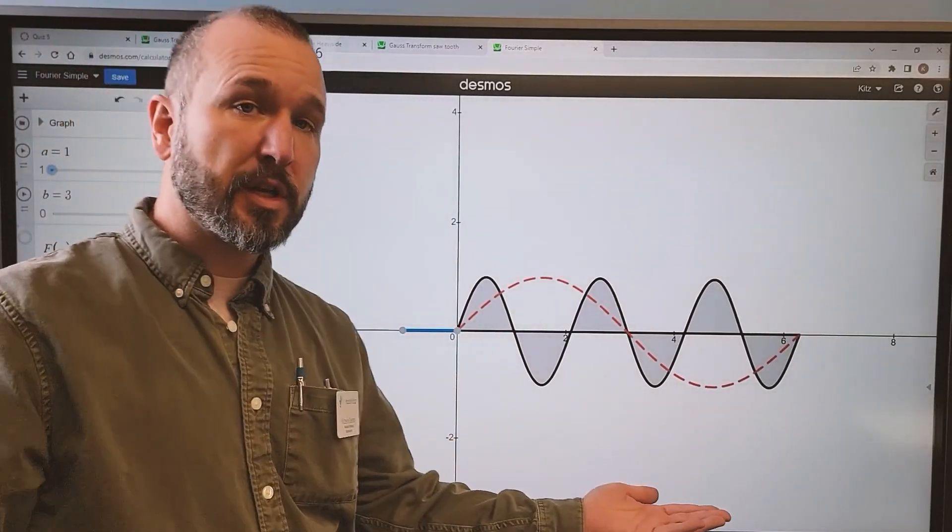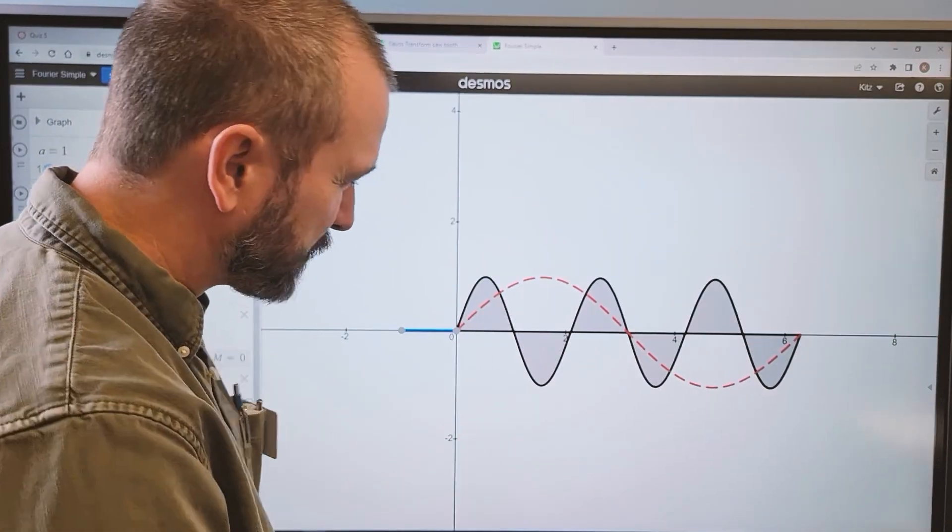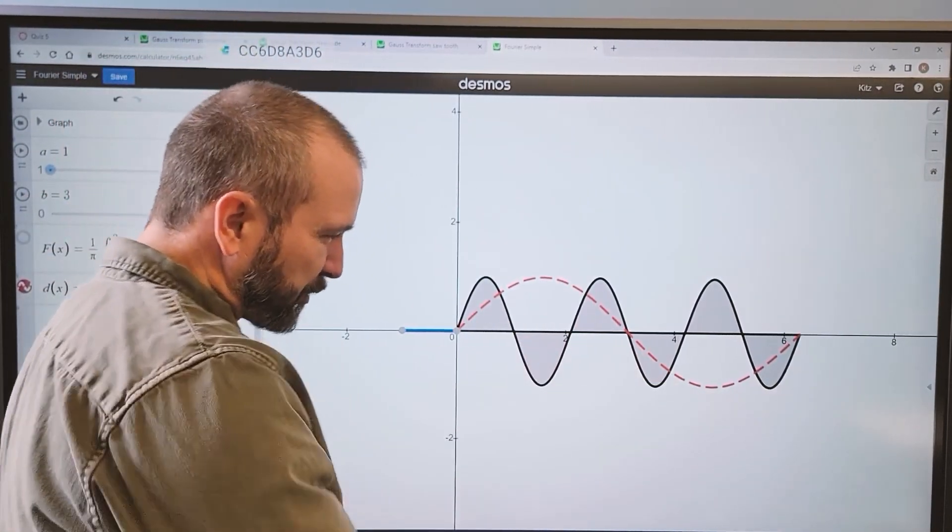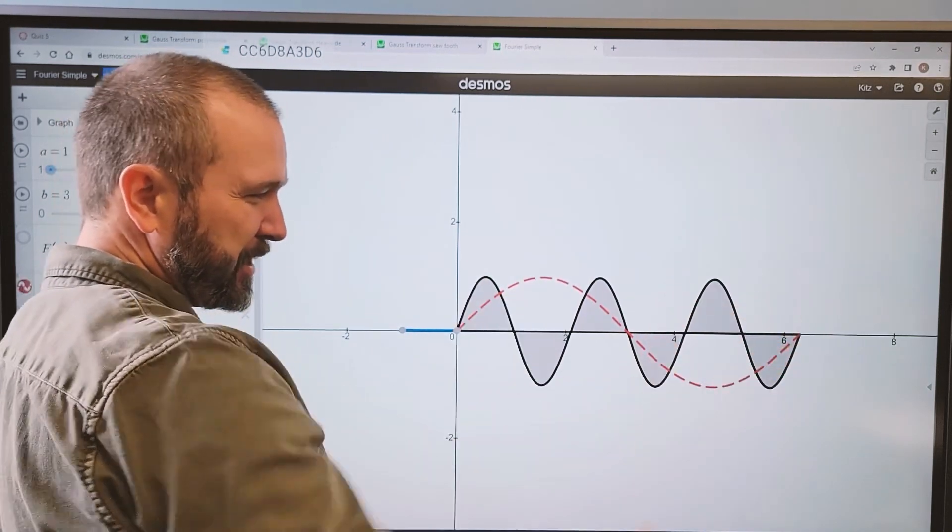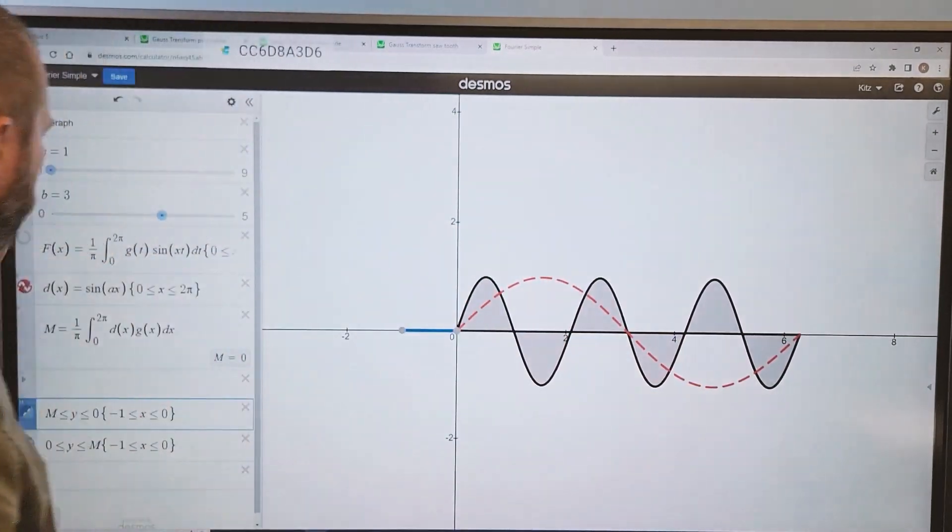So in this first instance, the computer is calculating the total mass as being zero. And that makes sense because this graph is so symmetric, right? The wave goes up and down and then the density goes up and down. And it's also symmetric. All the positive masses cancel out with the negative masses.